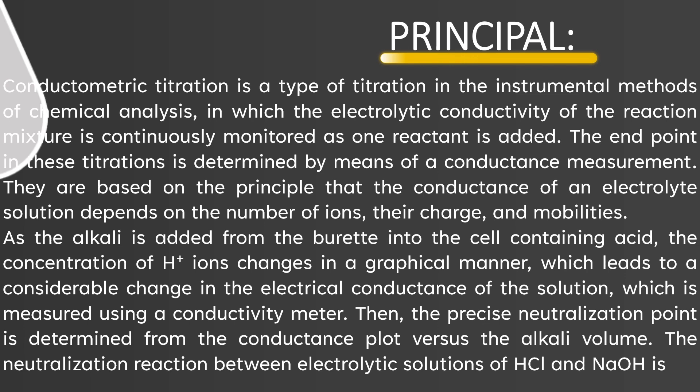Conductometric titration is a type of titration in the instrumental methods of chemical analysis, in which the electrolytic conductivity of the reaction mixture is continuously monitored as one reactant is added. The endpoint in these titrations is determined by means of a conductance measurement. They are based on the principle that the conductance of an electrolytic solution depends on the number of ions, their charge, and mobilities.